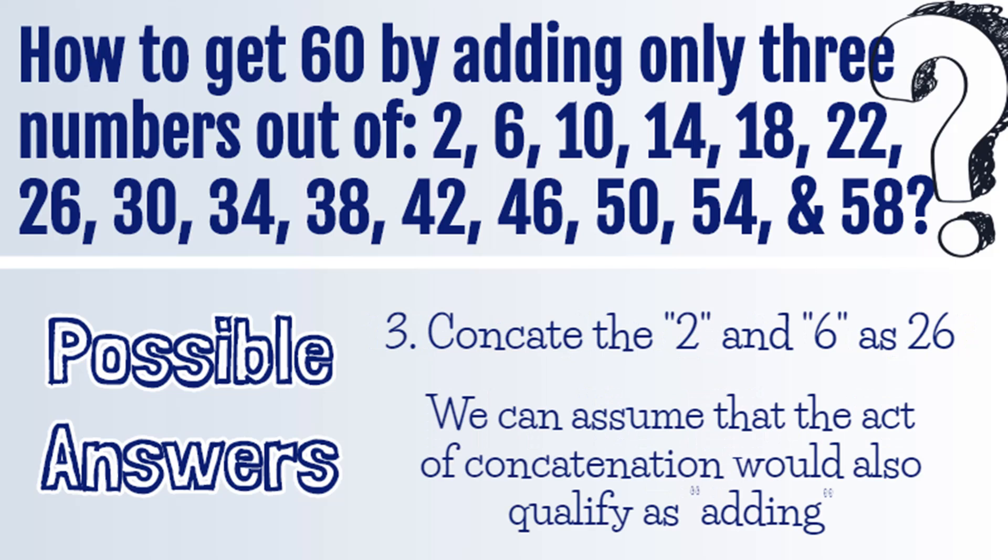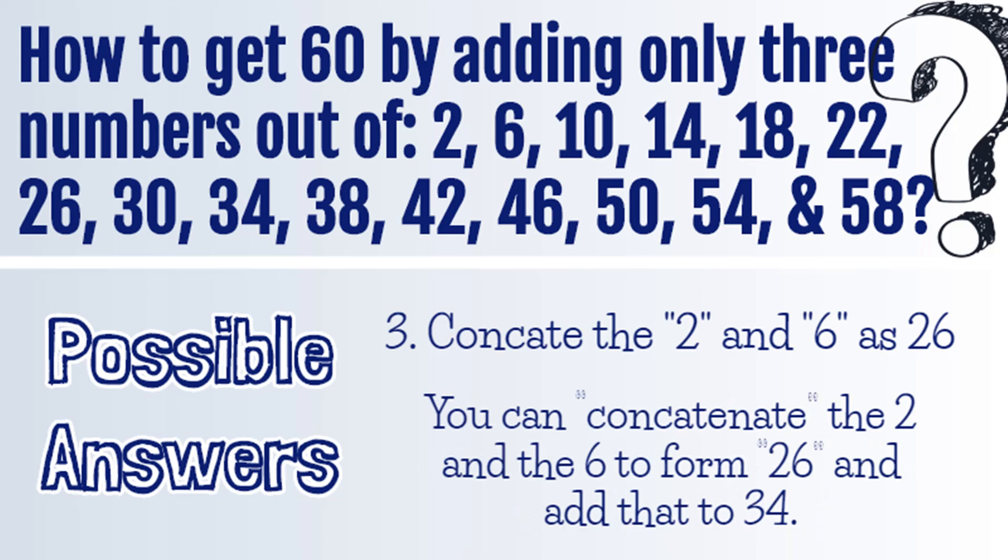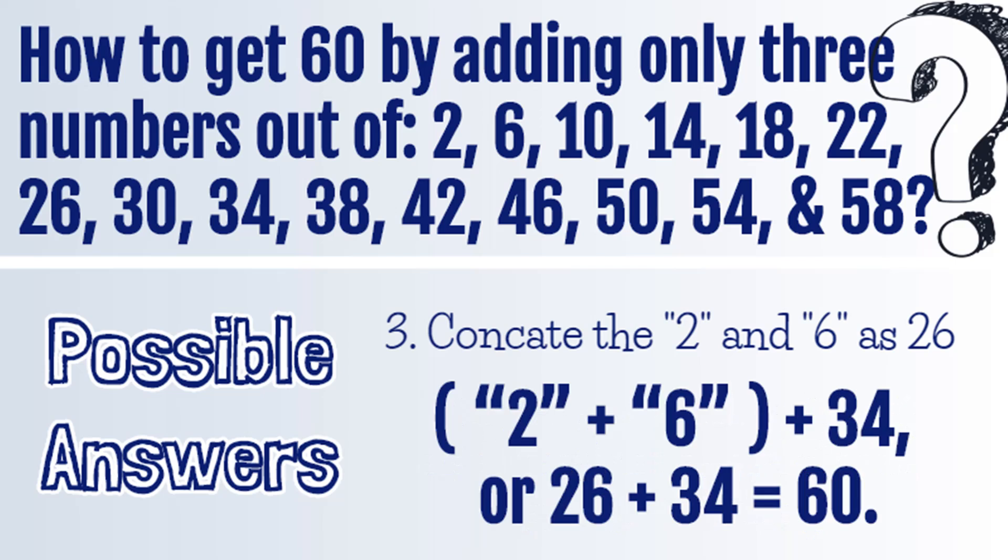We can assume that the act of concatenation would also qualify as adding. So you can concatenate 2 and 6 to form 26 and then add that to 34. 2 plus 6 gives you 26, and then we add 34 which gives you 60. Tricky, yes.